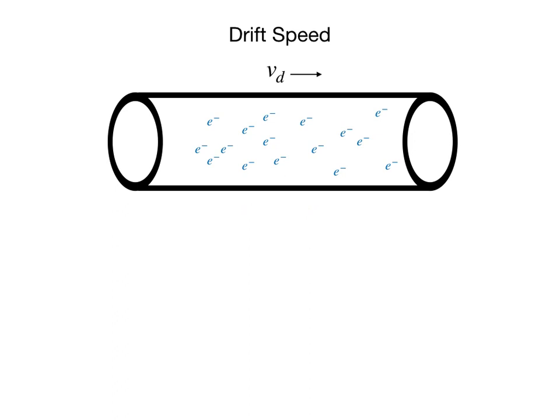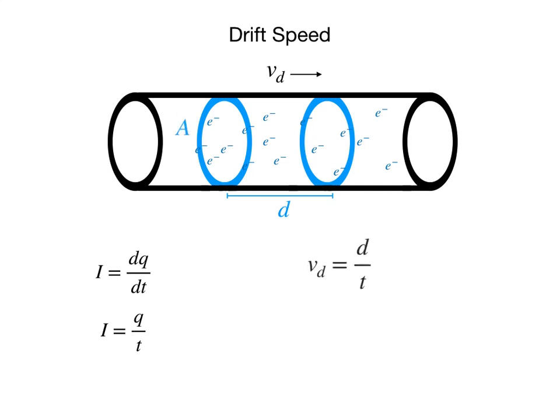Now, let's take a look at a smaller region of the wire of length d and of cross-sectional area A. Note that the current in the wire is given by the rate dq dt, but since we don't want to deal with derivatives, we will simply view this current as q over t. The drift speed is simply the ratio of d over t. We will look at the speed instead of velocity to make our analysis simpler, but the drift velocity of the electrons is opposite the direction of the current.